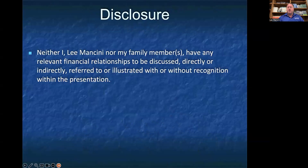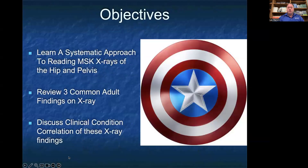I have nothing to disclose. Today we're going to learn a systematic approach to reading MSK x-rays of the hip and pelvis. We will review three common adult findings on x-ray and discuss clinical condition correlation of these x-ray findings.